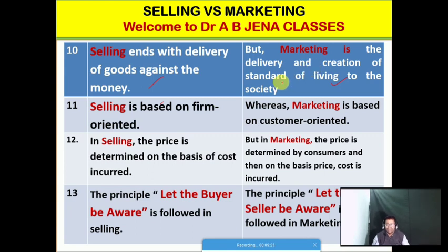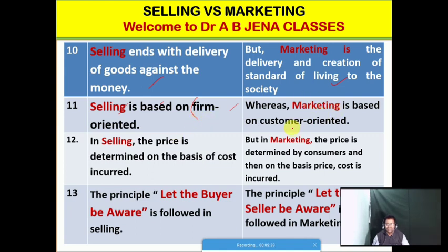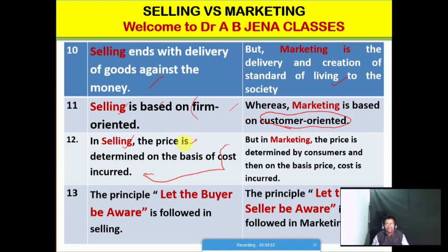Friends, I have already posted one video on different types of products and the basic difference between goods and services — kindly go through the posted video as well as some MCQs I have already posted. The next comparison: selling is farm-oriented or business-oriented, whereas marketing is customer-centered or customer-oriented. The next basis of comparison: in selling, the price is determined on the basis of the cost of production — the selling price is determined in order to calculate the profit.